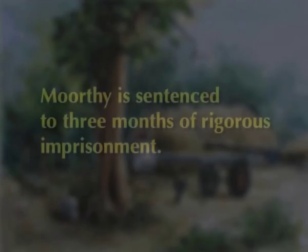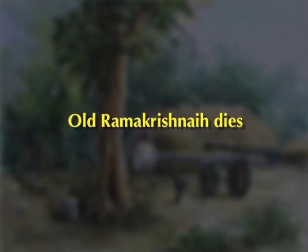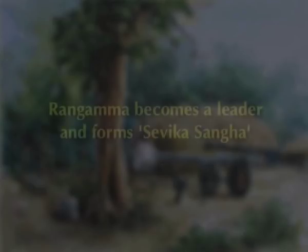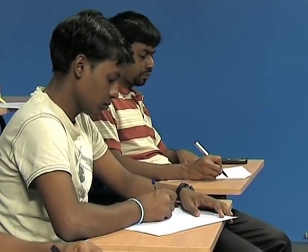The police soon arrive to arrest Moorthy. Several villagers are beaten up and arrested; everyone except Moorthy is released the next day. Developments occur suddenly in the village, with the Patelgiri of Range Gowda being suspended. Moorthy is sentenced to three months of rigorous imprisonment for instigating the parayas against the government. Old Ramakrishnaya dies, and there is double sorrow in Kanthapura. Rangamma becomes the leader of the Congress activities and forms the women's courts, the Sevika Sangha, where she trains them to face the blows of the lathis of the policemen.